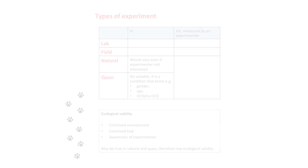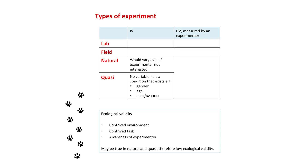The thing I particularly want to focus on is the fact that everyone looks at the independent variable when assessing how artificial a study is. So a lab experiment is done in a lab and the independent variable is manipulated there; in a field experiment, the independent variable is manipulated there. But the focus actually should be on the dependent variable.